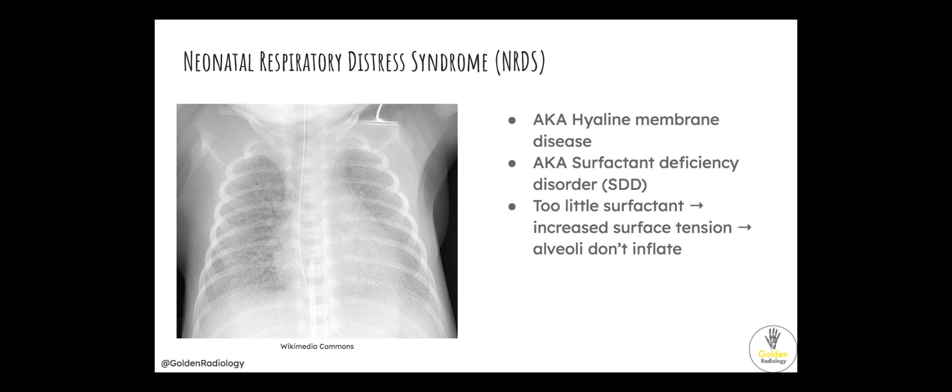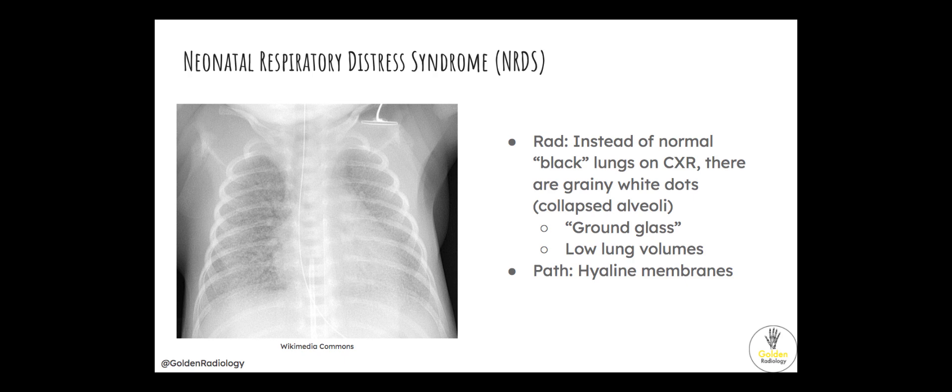Surfactant production starts around 34 weeks. Babies born premature won't have enough surfactant, and as a result the surface tension of their alveoli is high and their lungs can't fully inflate. Instead of the normal black lucent lungs we see on chest radiographs, you're going to see a bunch of grainy white dots representing collapsed alveoli. Buzzwords you might hear on the exam are ground glass appearance or low lung volumes.